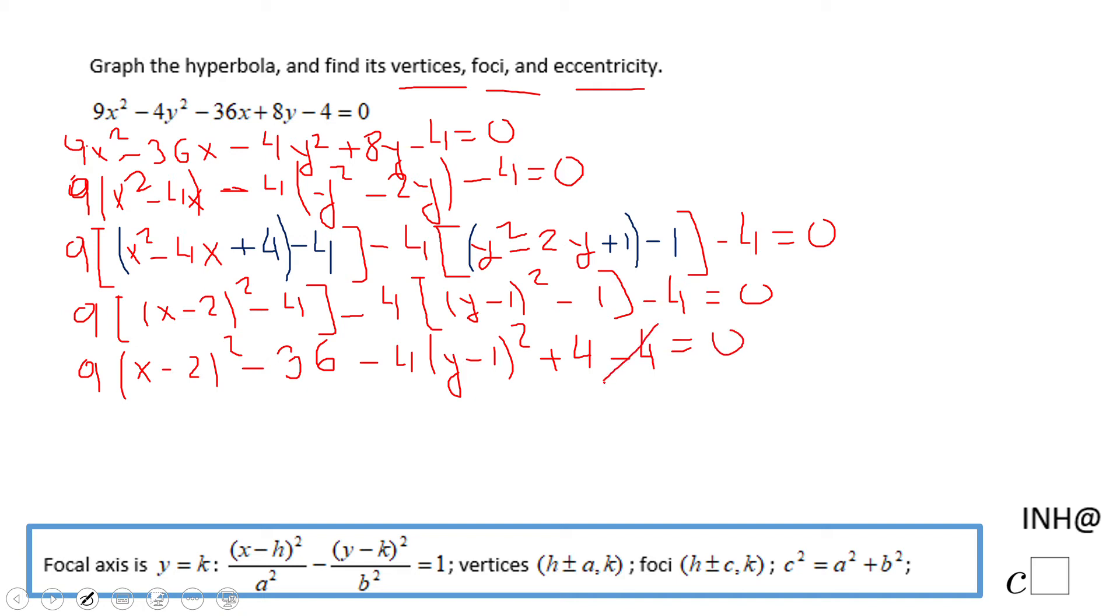And you notice already these two guys cancel out. We can do that, and it's okay to do it. And the next thing, we want to rearrange and move this negative 36 on the other side by adding 36. So we're going to have 9(x - 2)² - 4(y - 1)² = 36.